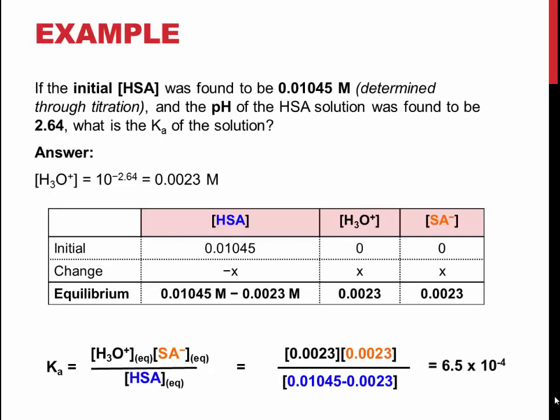Due to the fact that a weak acid is being used, Ka is expected to be low.